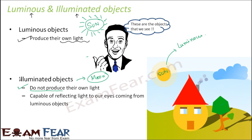There are many other examples of luminous objects besides the sun, such as fire, flame, lamp, and bulb — all are luminous objects. And illuminated objects include most of the things we are able to see: wood, table, chair, glass, utensils. Anything we can see that we know is not producing its own light falls under the category of illuminated objects.